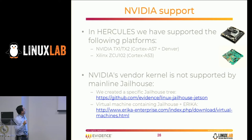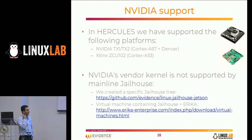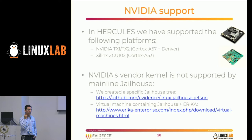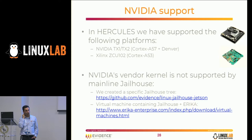In the Hercules project we supported two platforms: the NVIDIA Jetson TX1 and TX2, which has Cortex-A57s and two Denver cores on the TX2; and Xilinx with Cortex-A53 cores. NVIDIA ships its own vendor kernel rather than the vanilla kernel, which is not supported by mainline Jailhouse. So we created a specific Jailhouse tree for the NVIDIA vendor kernel, and also worked with the Jailhouse community to support the vanilla kernel in standard Jailhouse.